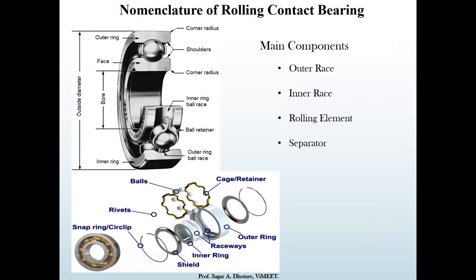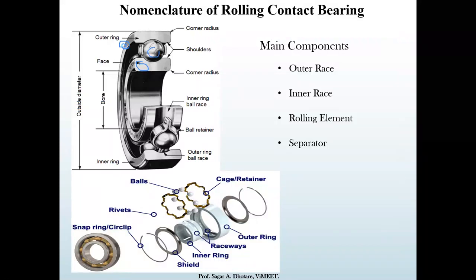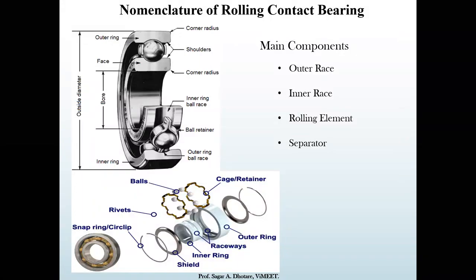The basic construction of the rolling contact bearing: the first component is the outer ring, also called the outer race. Then the inner ring, that is the inner race. In between is the rolling element, which plays an important role in the load carrying capacity of the bearing.